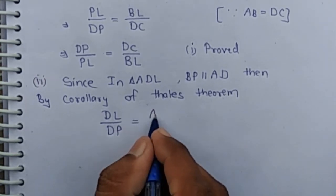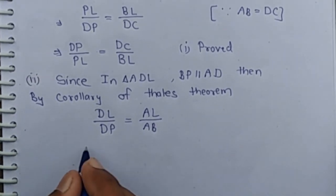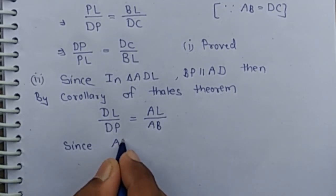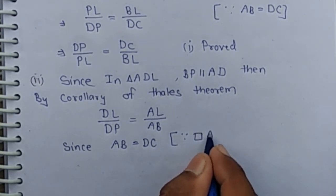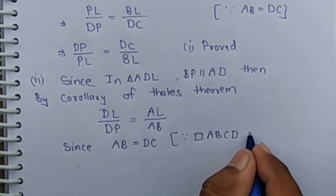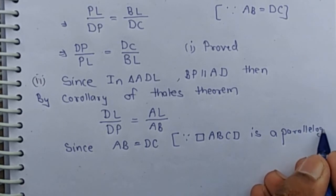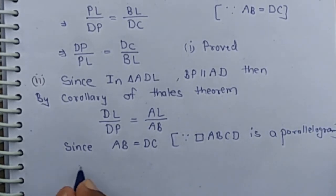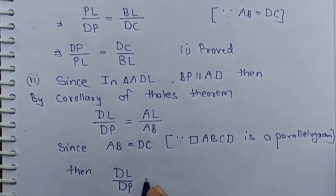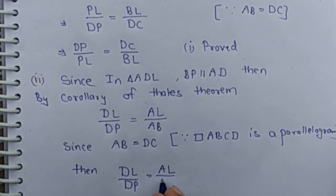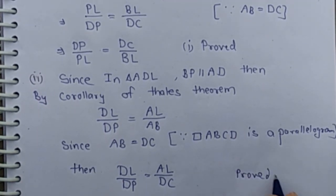DL by DP is equal to AL by AB. But AB is equal to DC since ABCD is a parallelogram. Therefore DL by DP is equal to AL by DC. Second part is proved.